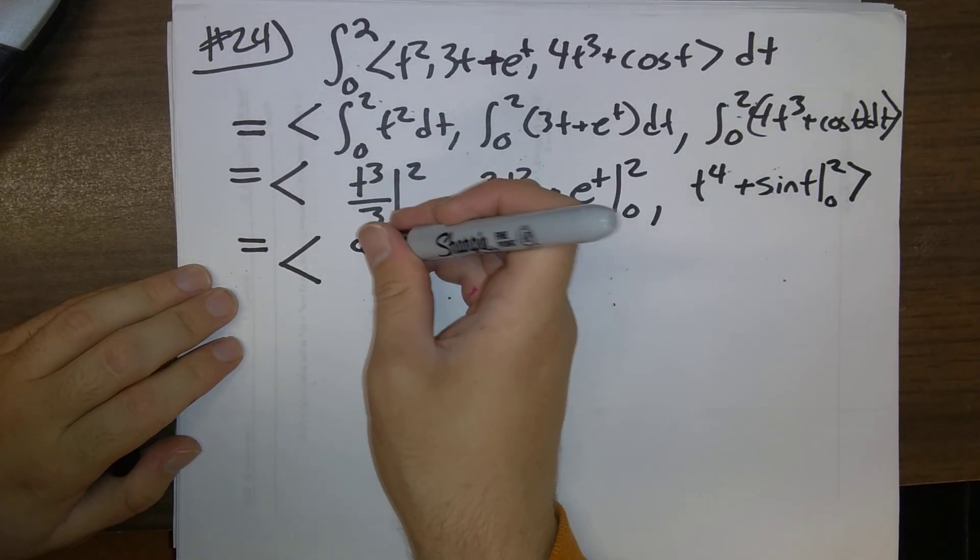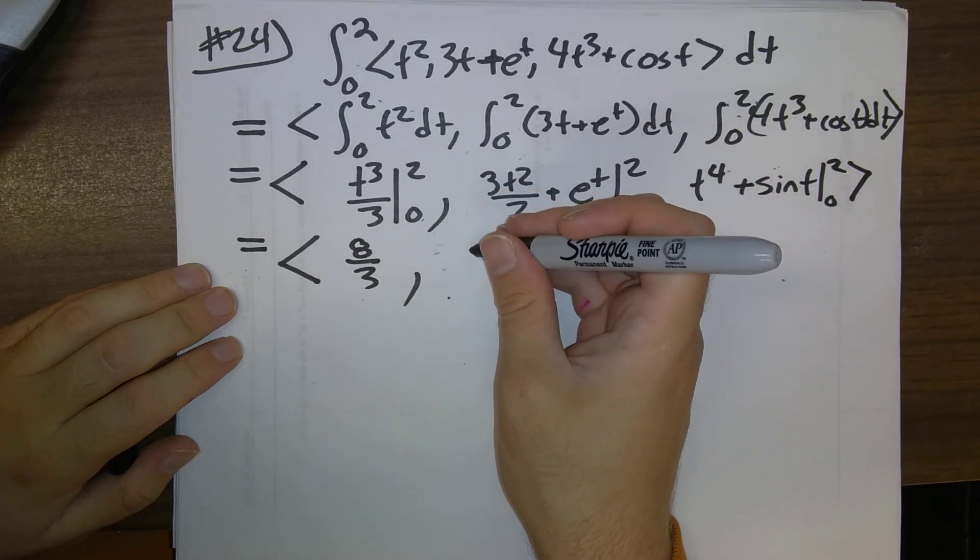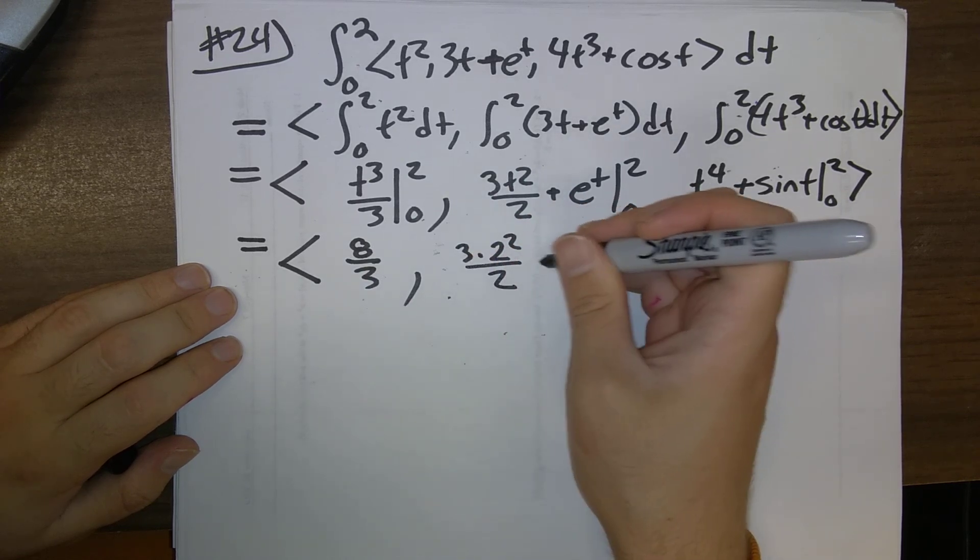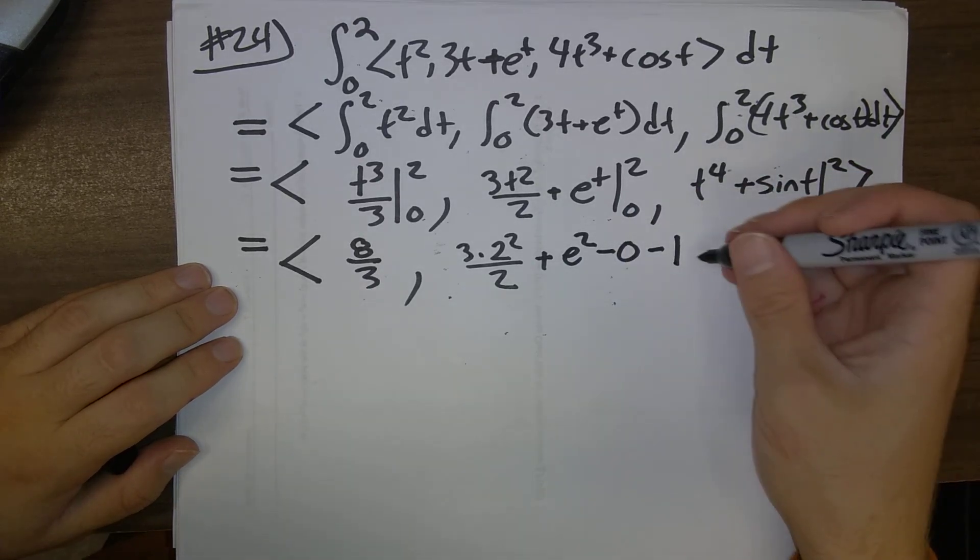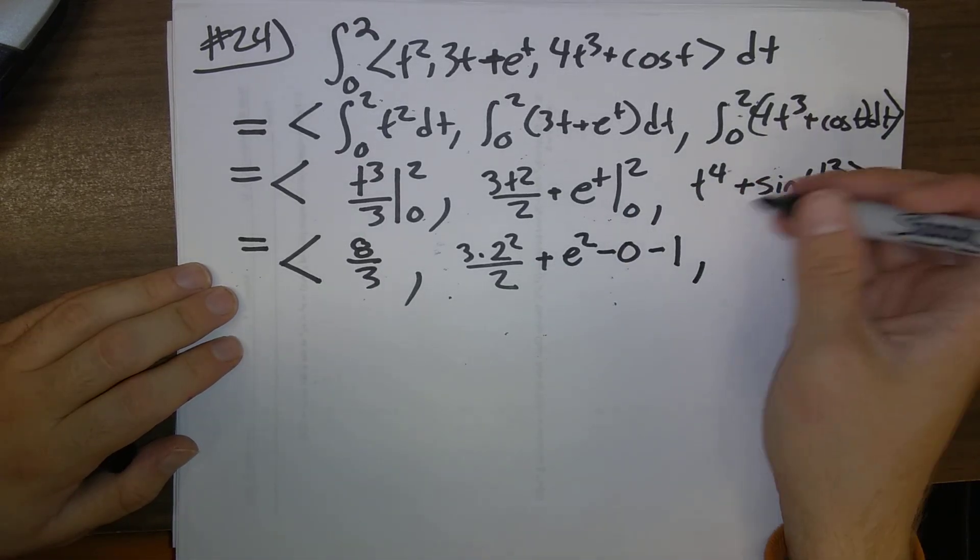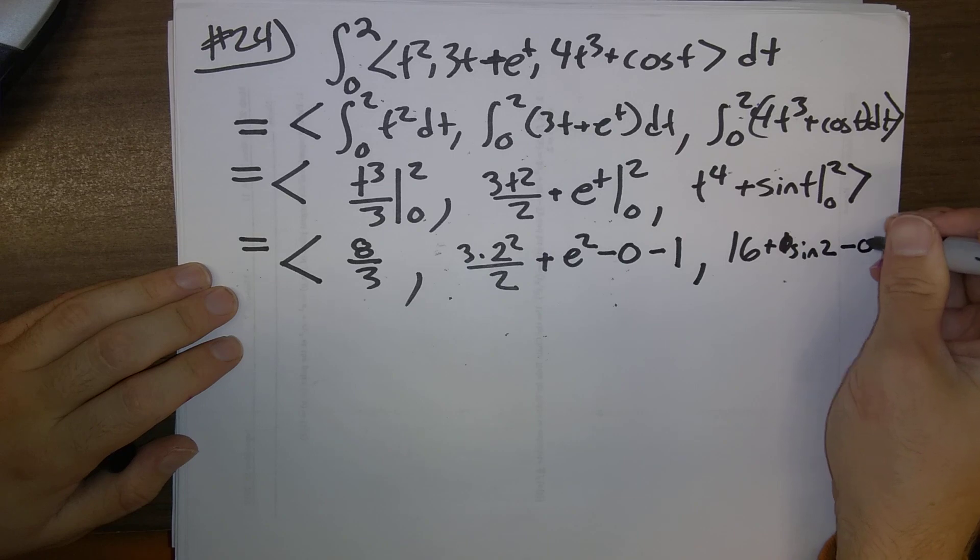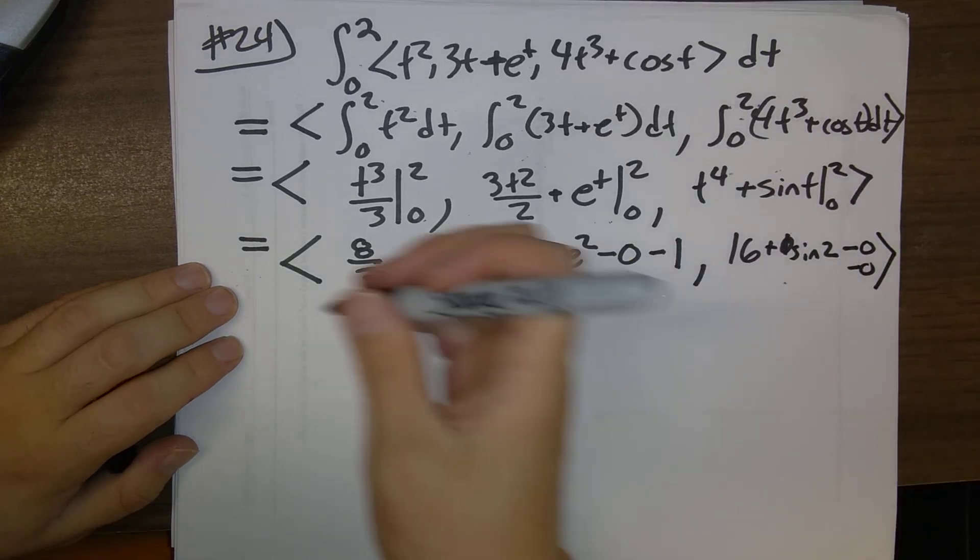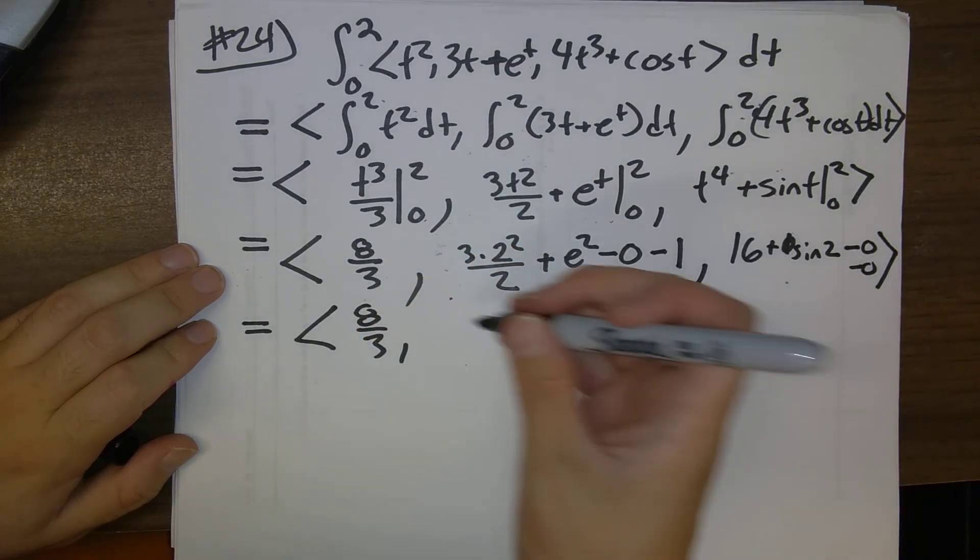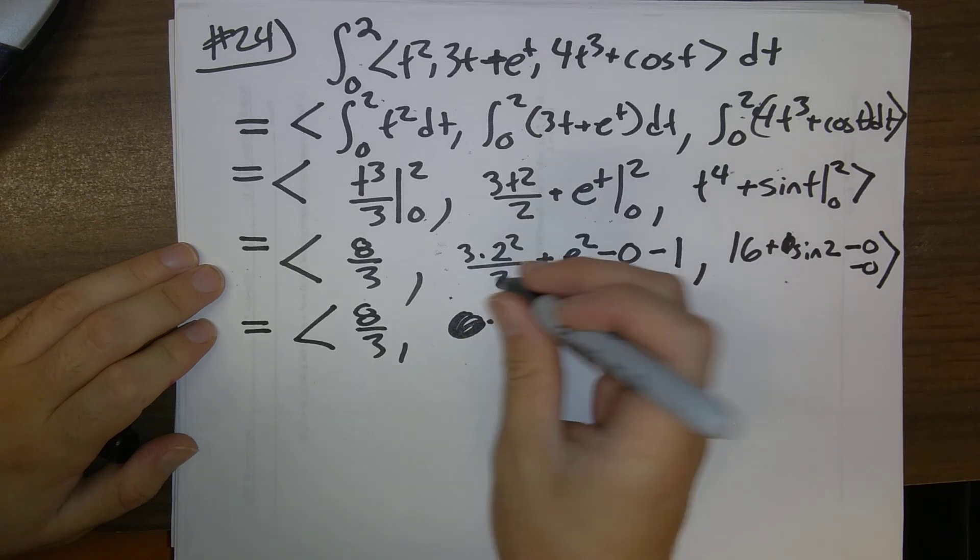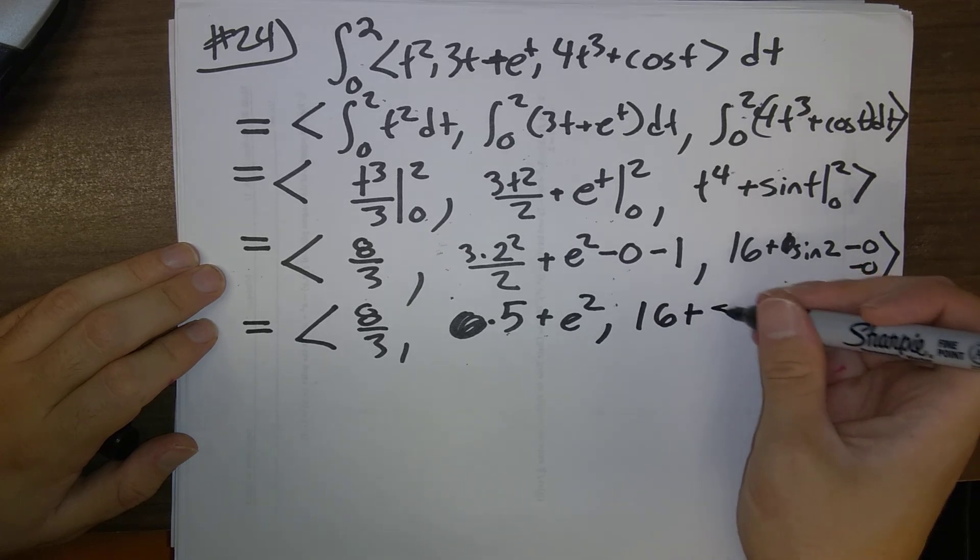So, what's our answer here? 8 thirds minus 0 is just 8 thirds. 3 times 2 squared over 2 plus e squared minus 0 minus 1, e to the 0 is 1. And 2 to the 4th is 16 plus sine of 2 minus 0 minus 0 because sine 0 is 0. So, what do we have? 8 thirds and that looks like 6 minus 1 is 5 plus e squared and 16 plus sine of 2.